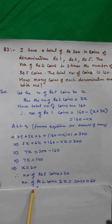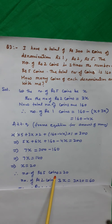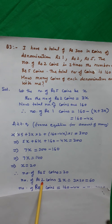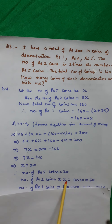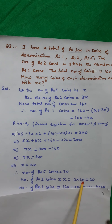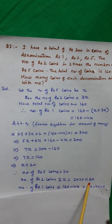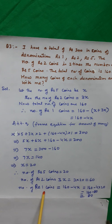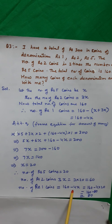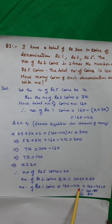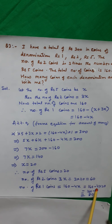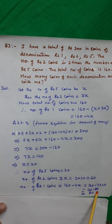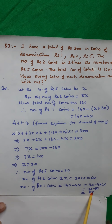Therefore, number of 5-rupee coins is 20. Number of 2-rupee coins will be 3x, that is 3 × 20, equal to 60. And number of 1-rupee coins will be 160 minus 4x, that is 160 minus 4 × 20, equal to 160 minus 80, that is 80.